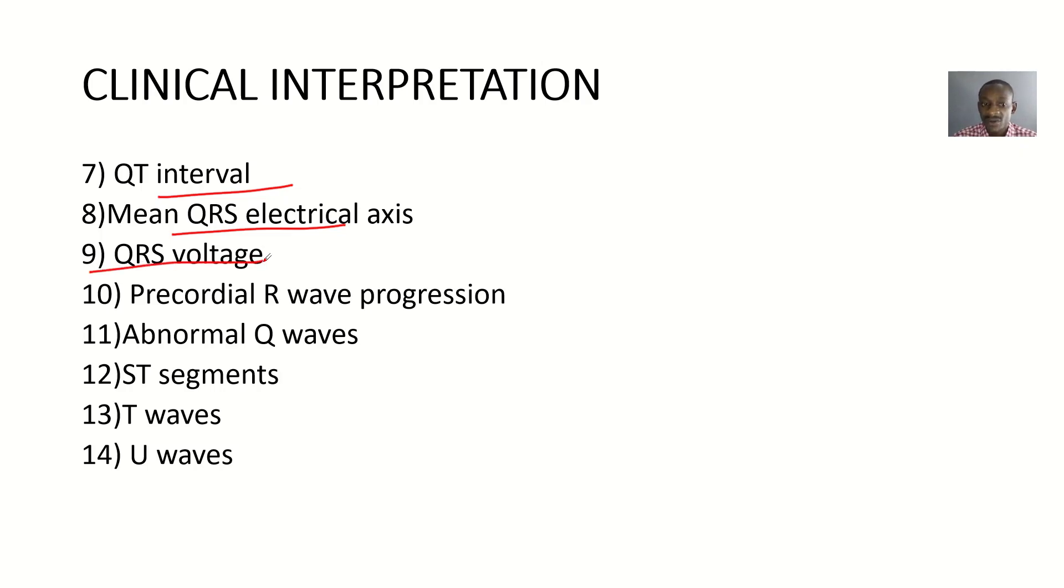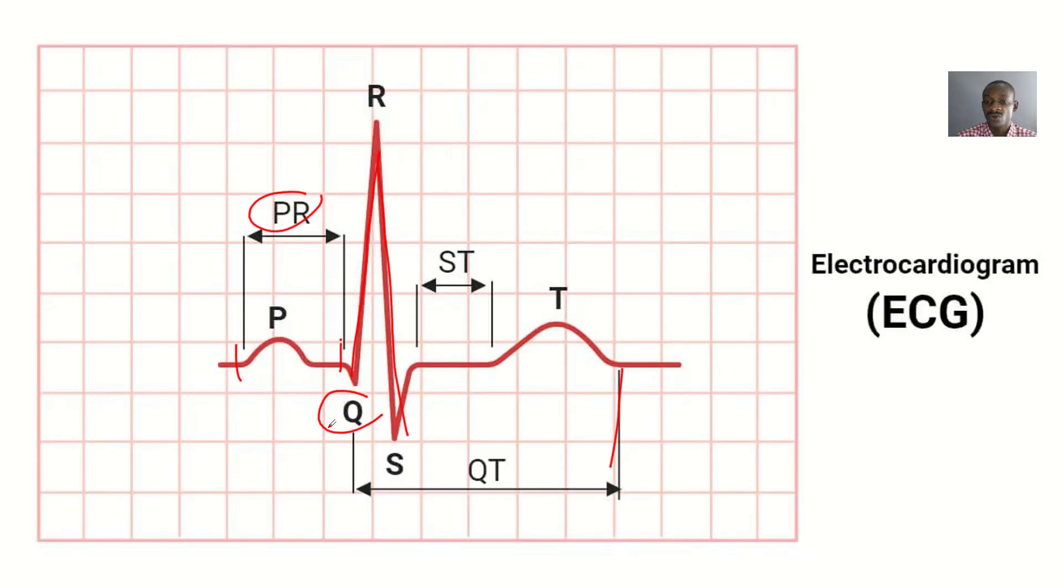Take the QRS voltage. Then look at the precordial R wave progression—is it normal? Also spot out for abnormal Q waves, spot out for ST segments, spot out for the T waves, and spot out for the U waves. But one thing is the U waves sometimes could be absent.